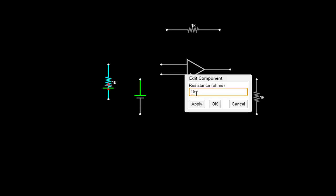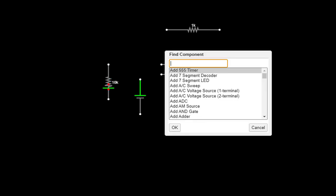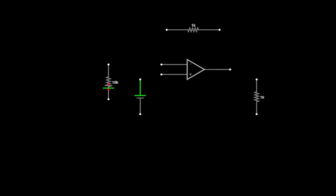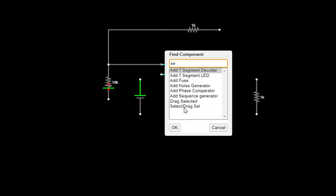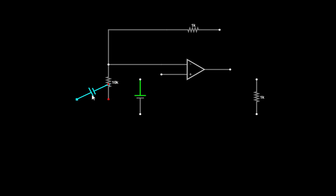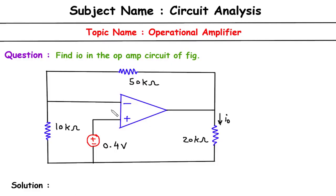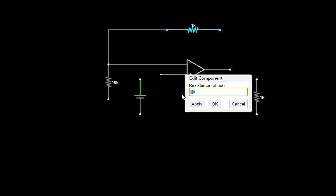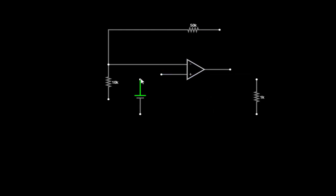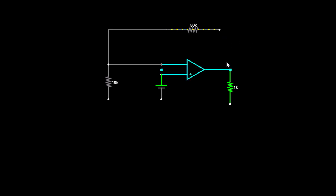This 10 kΩ resistor is connected to the inverting terminal of the op-amp. It is also connected to the next resistor, which has a value of 50 kΩ. Then it is connected here like this, and this resistor is connected and wired accordingly.